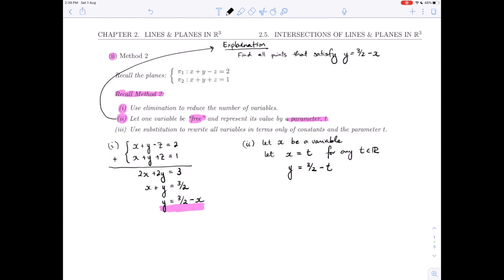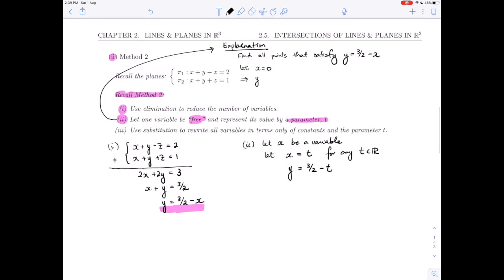We might do what we've done in previous situations. We might choose a value for one and then solve for the remaining. If we let x = 0, then y is determined. Y has to be 3/2. Obviously, that's not the only possibility. We could let x be 1/2. If x is fixed at 1/2, y is also determined. Y is 3/2 minus 1/2, which is 1.